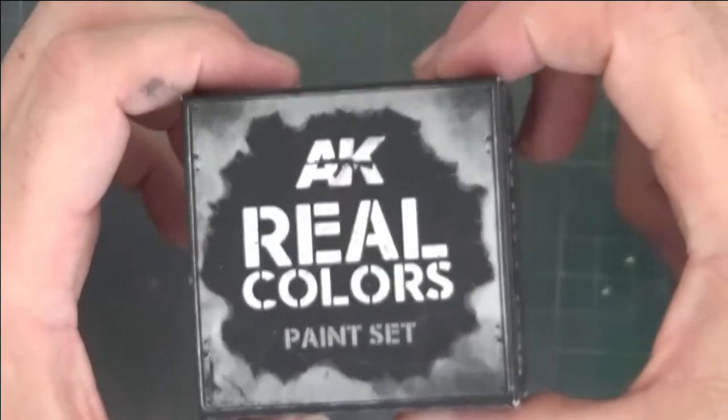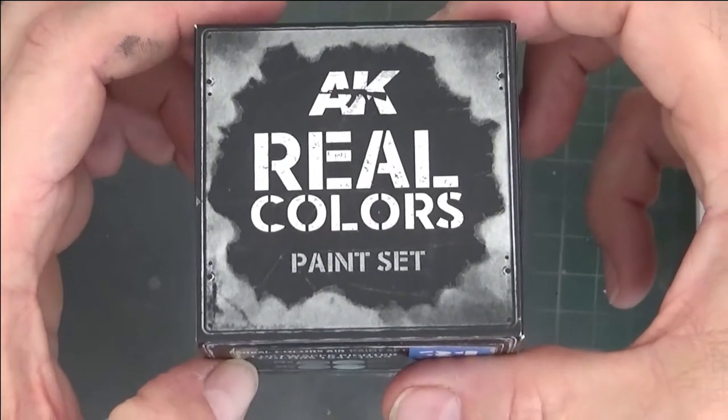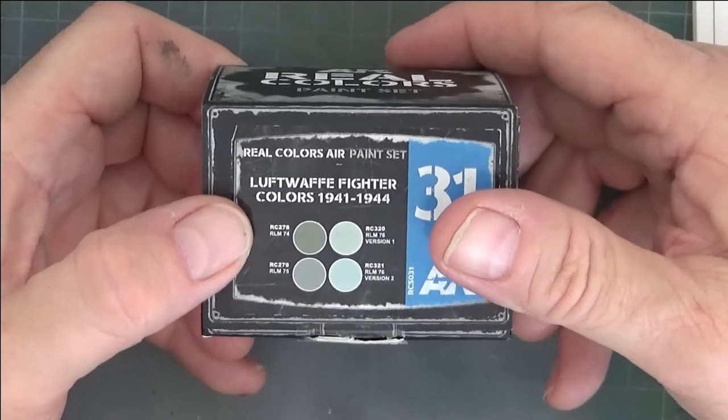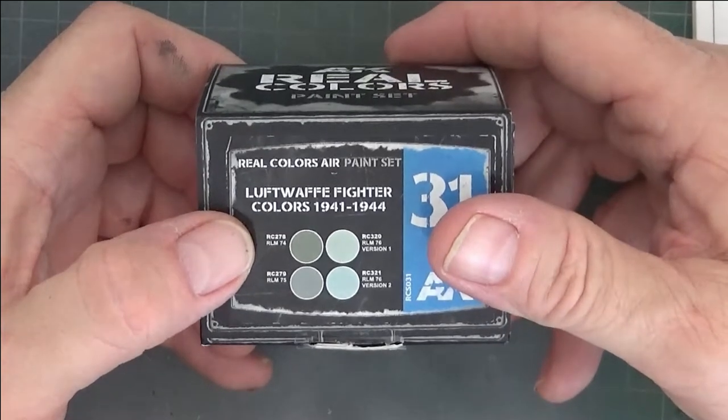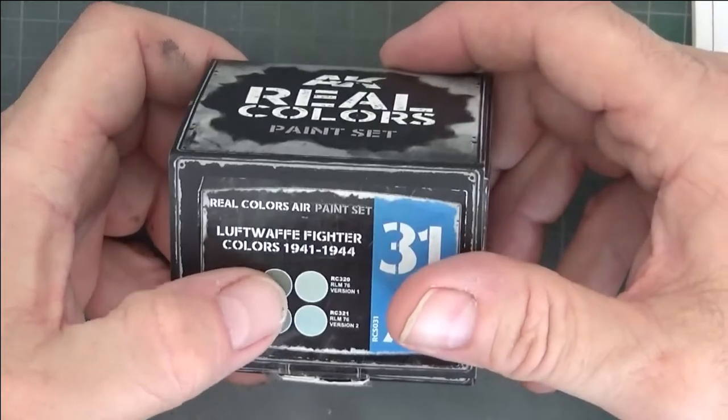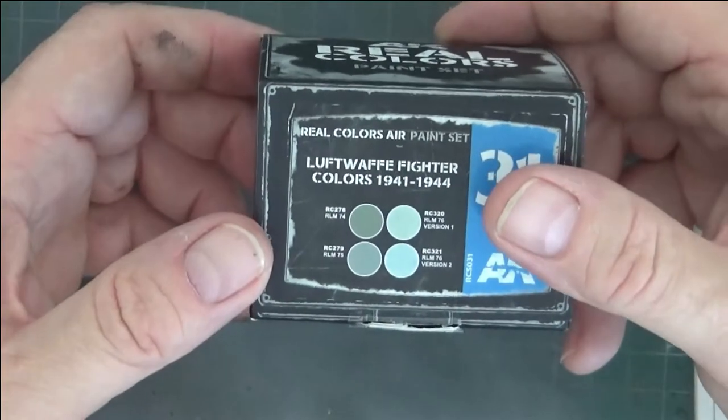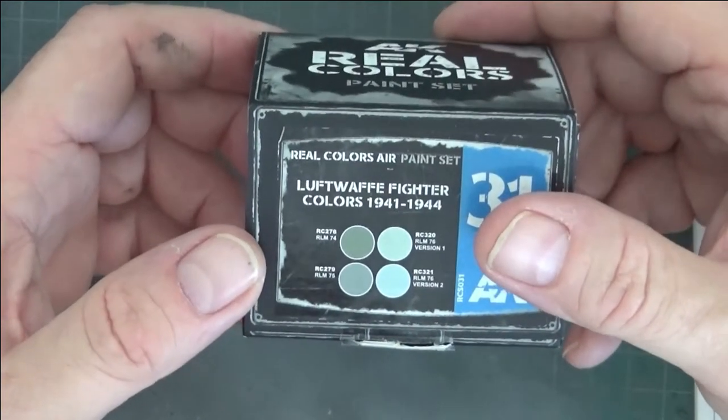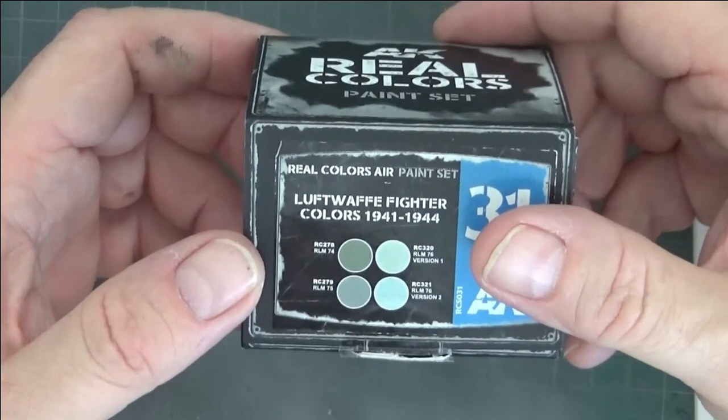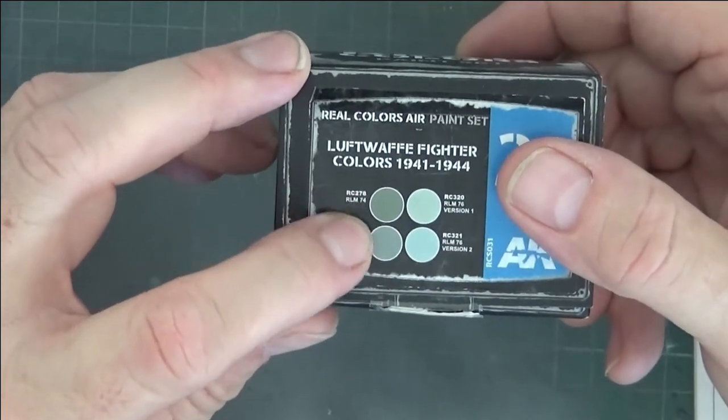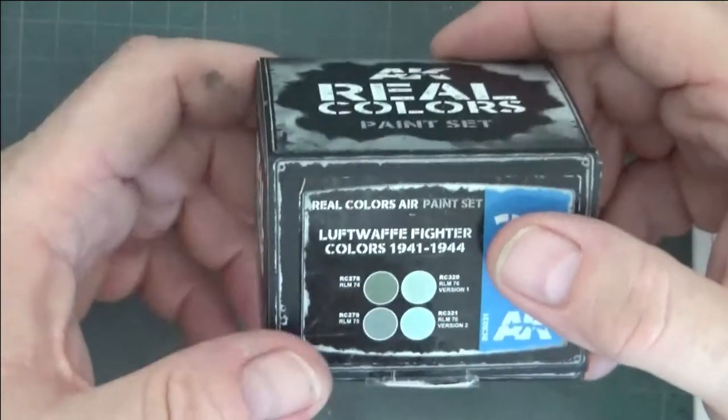I decided to invest in one of these AK Real Colors paint sets. This is for Luftwaffe fighter colors 1941 to 1944. You've got RLM74, RLM75, and RLM76 version 1 and RLM76 version 2. When the two different versions of RLM76 were used, I have absolutely no idea.